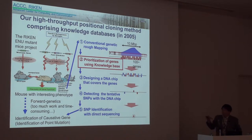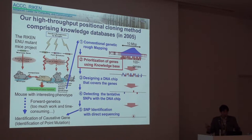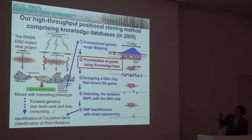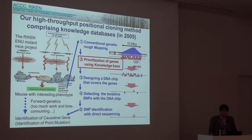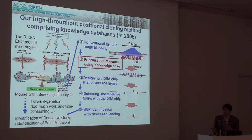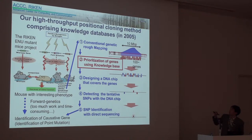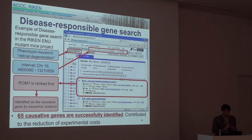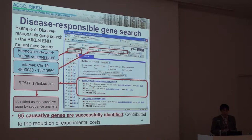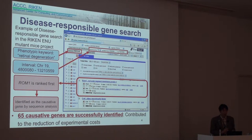This forward-genetic approach is very costly, so we developed a high-throughput positional cloning method using knowledge databases in 2005. In this workflow, GRACE is used to prioritize tens of hundreds of candidate genes located in the interval obtained by conventional genetic mapping. This is an example of disease-responsible mouse gene search using GRACE via its web-oriented graphical interface named POSMED — positional medline.